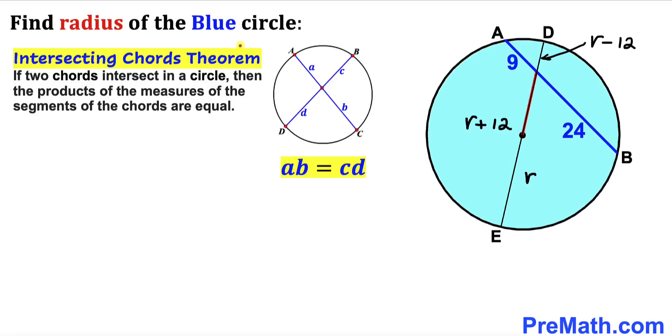Now let's recall the intersecting chords theorem. According to this theorem, if two chords intersect in a circle, then the product of the measures of the segments of the chords are equal. As you can see in this diagram, these two chords intersect such that the product of line segments A times B on the left hand side equals the product of line segments C and D. As a result we get the formula A times B equals C times D.